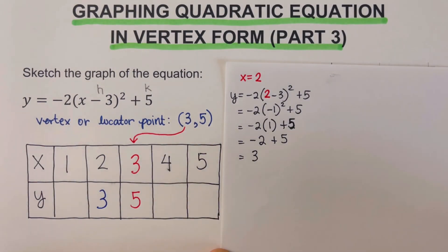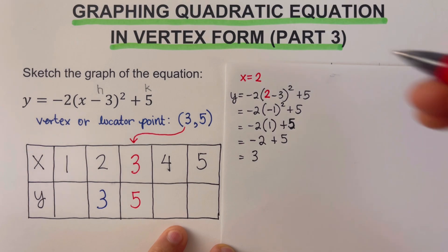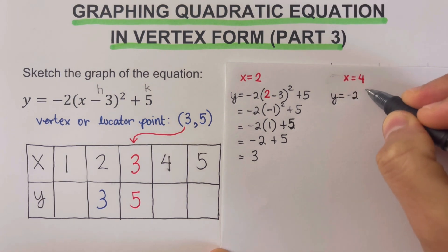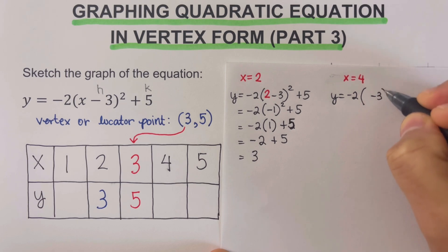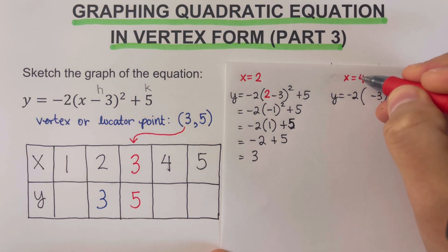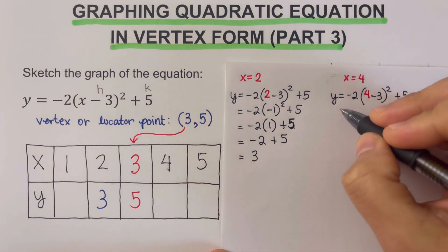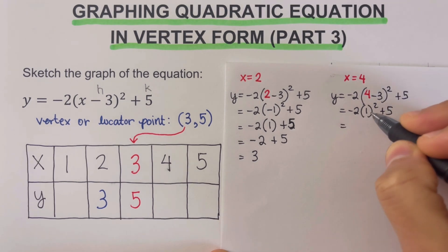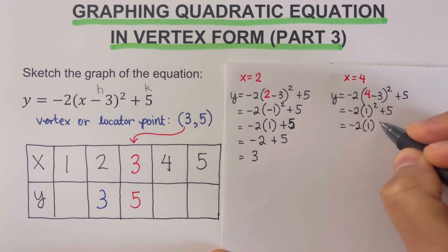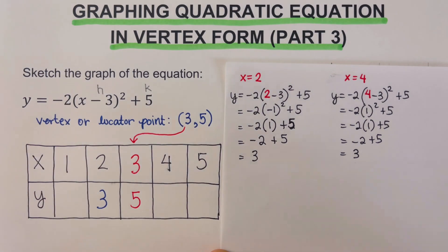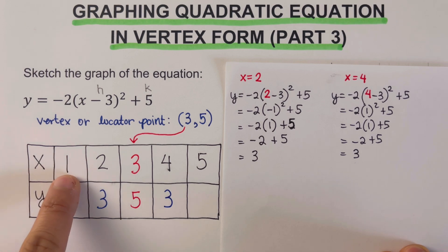For x = 4: y equals negative two times (4 minus 3) squared plus 5. That's negative two times (positive one) squared plus 5, so negative two times 1 is negative two, plus five is positive three. The y-value when x = 4 is also three. The work for x = 1 and x = 5 is shown as well to complete the table.